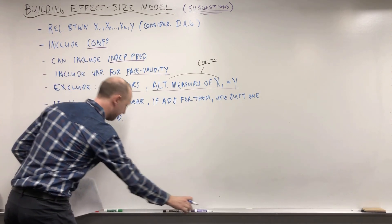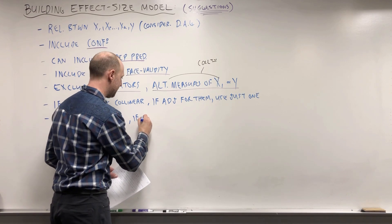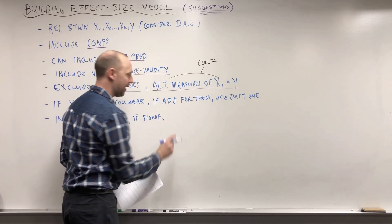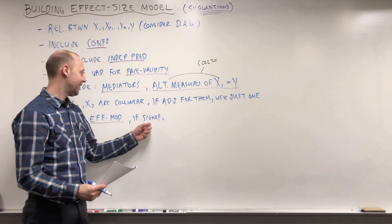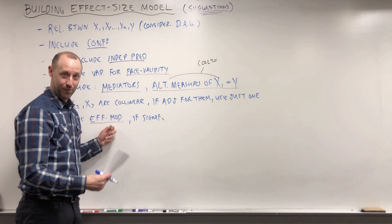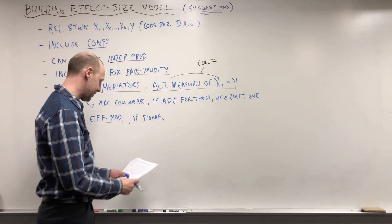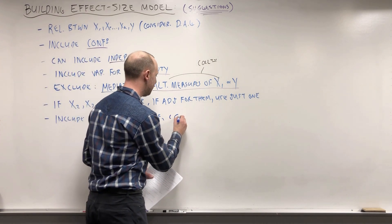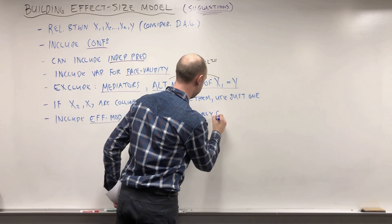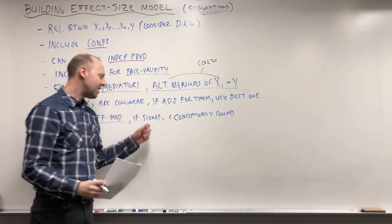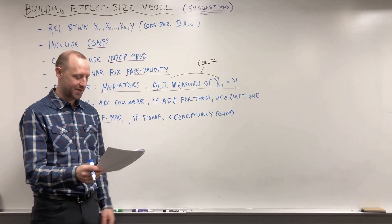Include effect modifiers if they are statistically significant and conceptually sound. We don't want to get too hung up on statistical significance, but if there's statistical evidence that effect modification is real and not due to chance, and it makes sense conceptually that the variable would be an effect modifier, then include it.